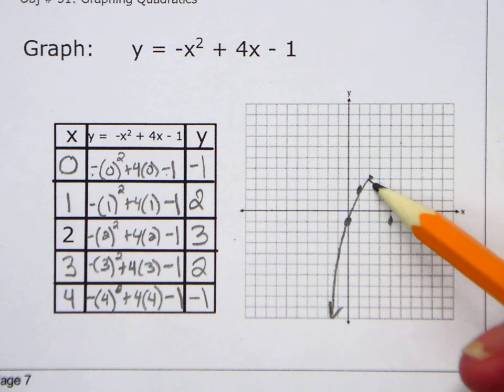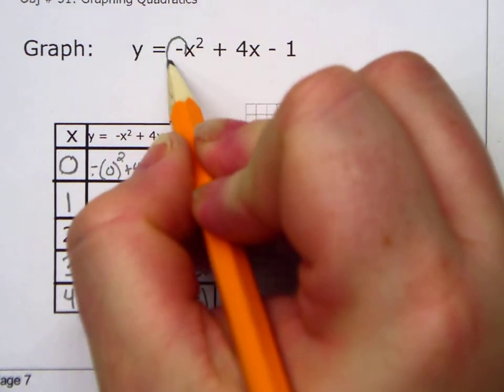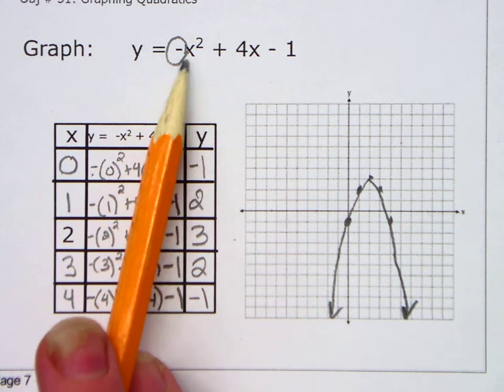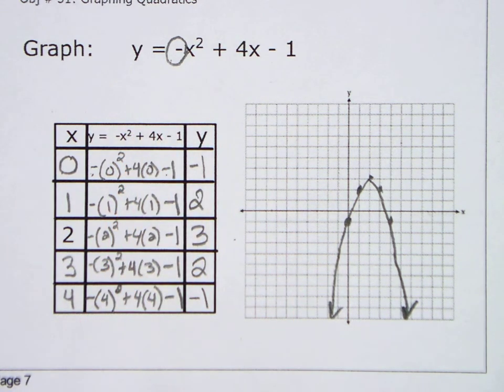So what happened in this one? It's upside down. Why do you think that happened? Because a negative in front of the x. When your a is negative, your parabola is upside down.